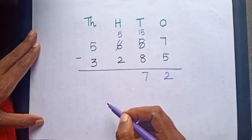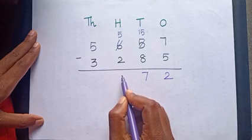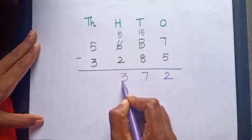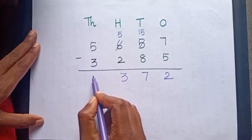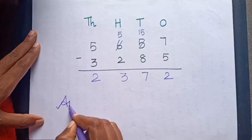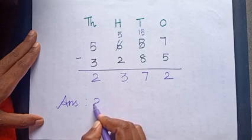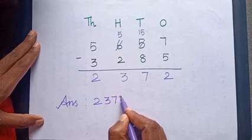5 minus 2 is equal to? Yes, 3. 5 minus 3 is equal to? Yes, 2. Therefore, the answer is 2,372.